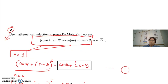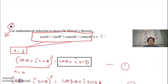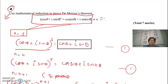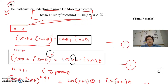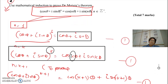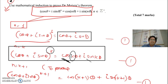Step two is to assume for n equals k. This is our assumption step. We replace n with k on both sides. So the assumption is that (cos θ + i sin θ)^k can be written as cos kθ + i sin kθ. This is really important because we're going to use it.